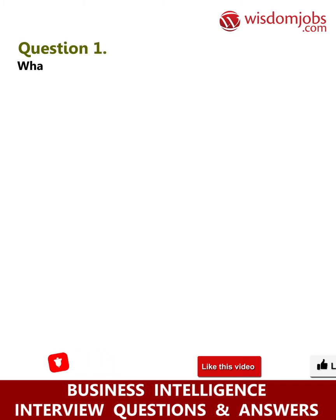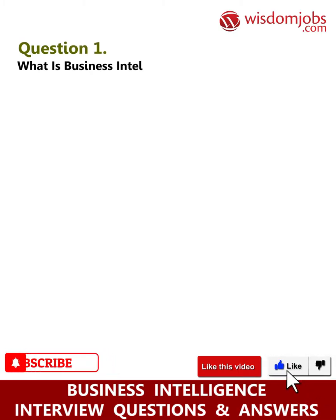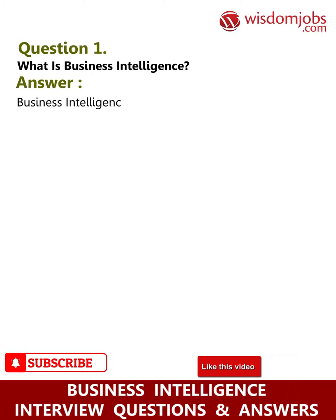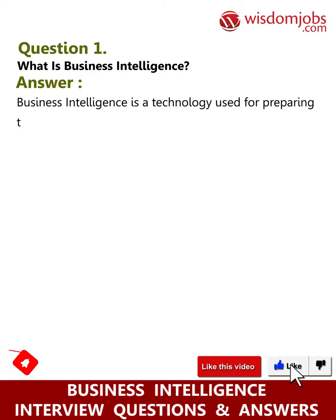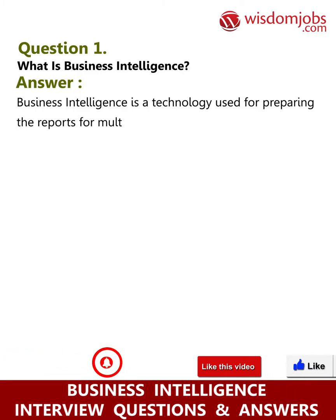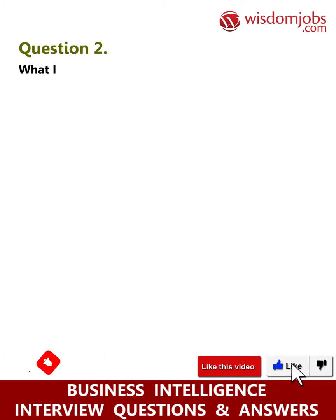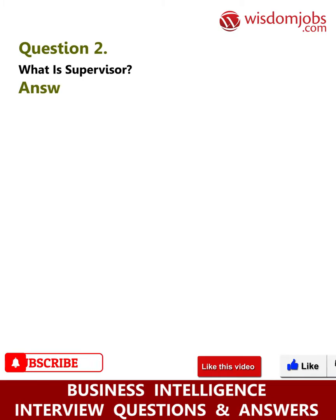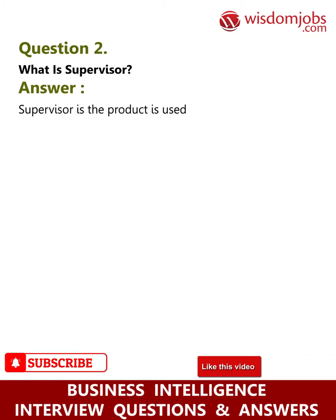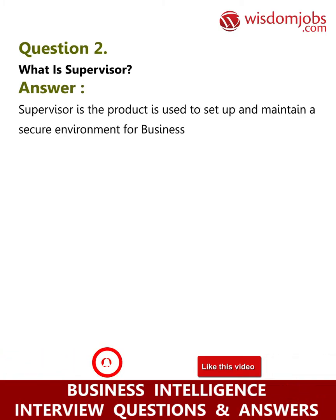Question 1: What is Business Intelligence? Answer: Business Intelligence is a technology used for preparing reports for multi-dimensional analysis. Question 2: What is Supervisor? Answer: Supervisor is the product used to set up and maintain a secure environment.